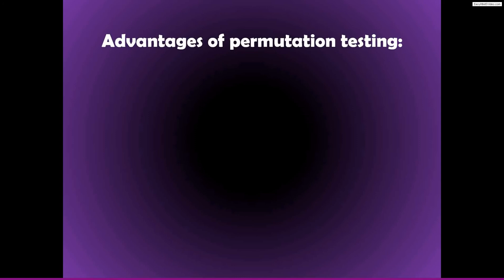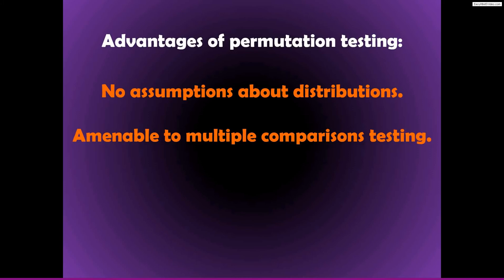Just by way of quick review, two major advantages of permutation testing in electrophysiology or neuroscience data analyses: first, we don't need to make any assumptions about the distributions that characterize the data, or about the distributions of parameters under the null hypothesis. This is because we generate our own distributions of null hypothesis statistical values. A second advantage is that permutation testing is very amenable to multiple comparisons corrections — that topic will be covered in the next lecture.